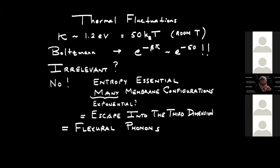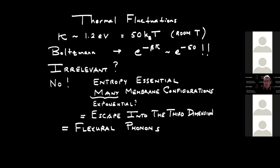The bending rigidity of graphene is controlled by atomic physics — it's on the electron-volt scale, around 1.2 eV. At room temperature, kT is about 1/40 of an electron volt, so the bending rigidity is about 50 kBT. If you're trained in thermodynamics you might say this is negligible — the Boltzmann factor is of order e^{-50} — so shouldn't it be irrelevant? The answer is no.